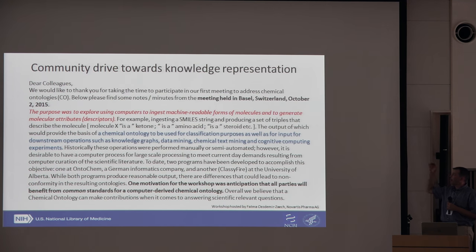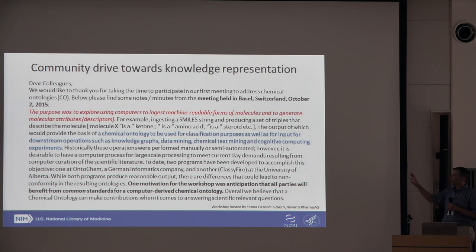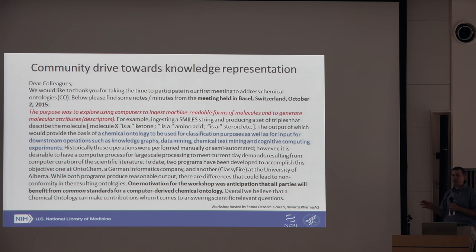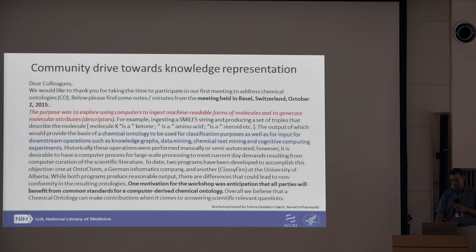We've also been involved in other communities dealing with knowledge representation and chemical ontologies. There was a workshop held in Basel, Switzerland on the Novartis campus, where they're very interested in classifying chemicals in a standard way. There are tens of millions of small molecule chemicals that are known, but the way you harness them for inference, for search, and other aspects is in some ways not very helpful or machine readable. We're working towards computer-derived chemical ontologies to describe new chemistry as a function of time.